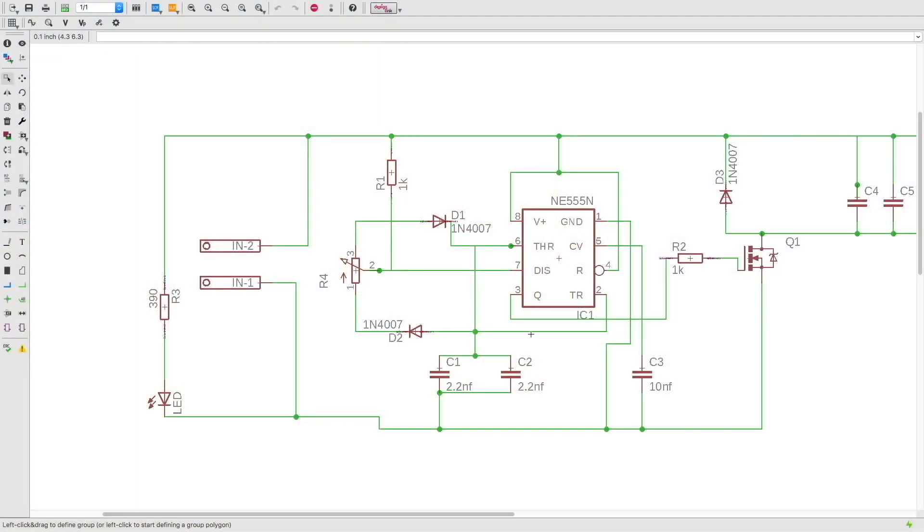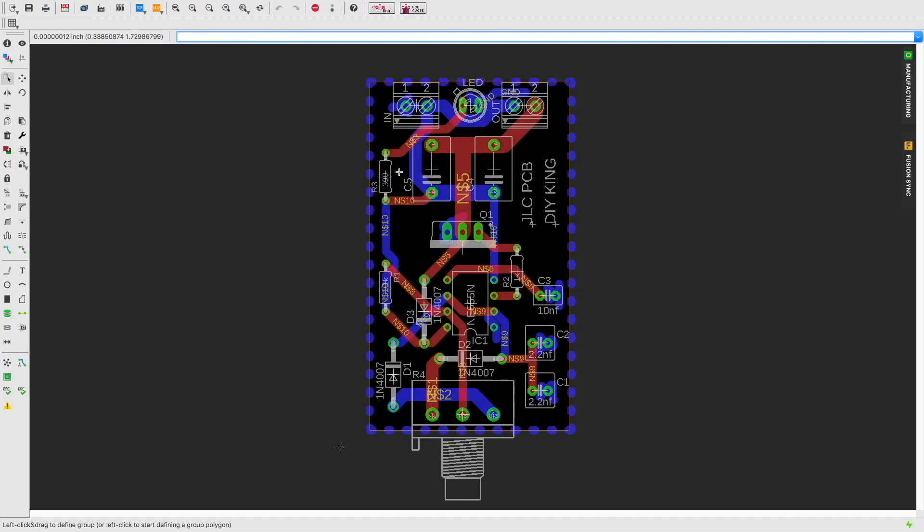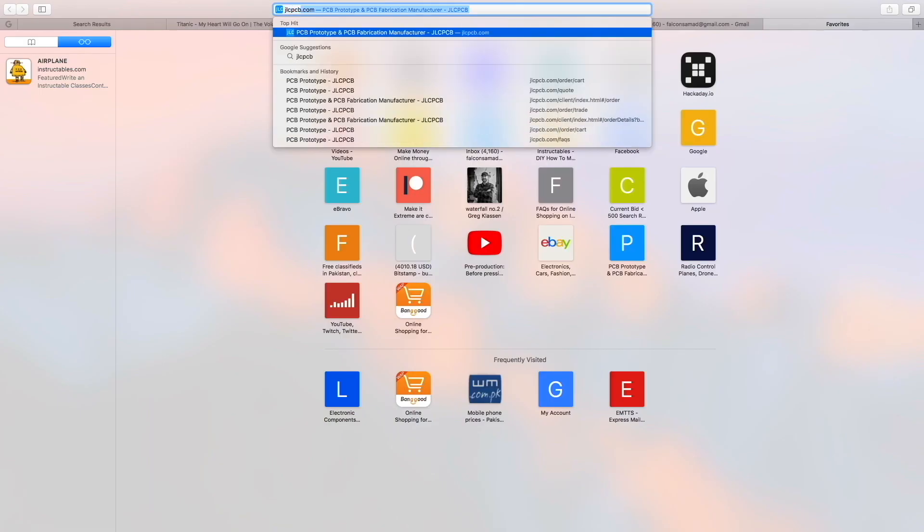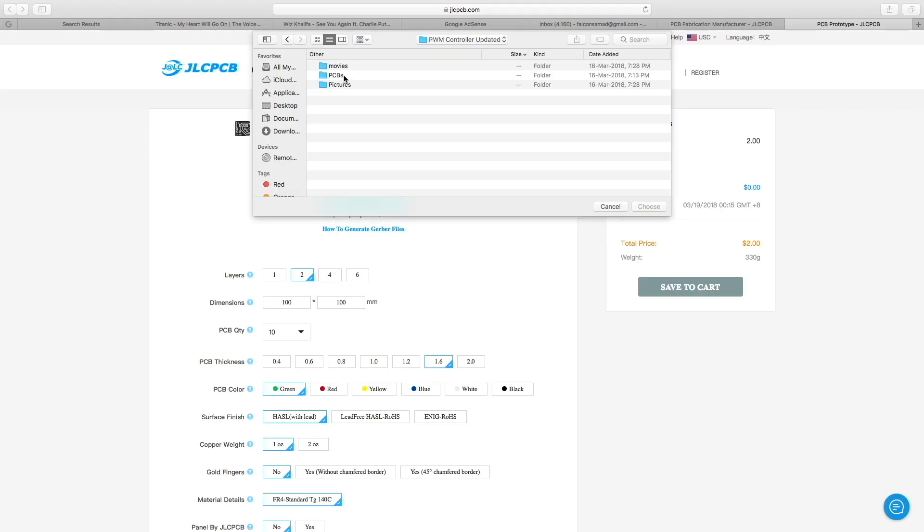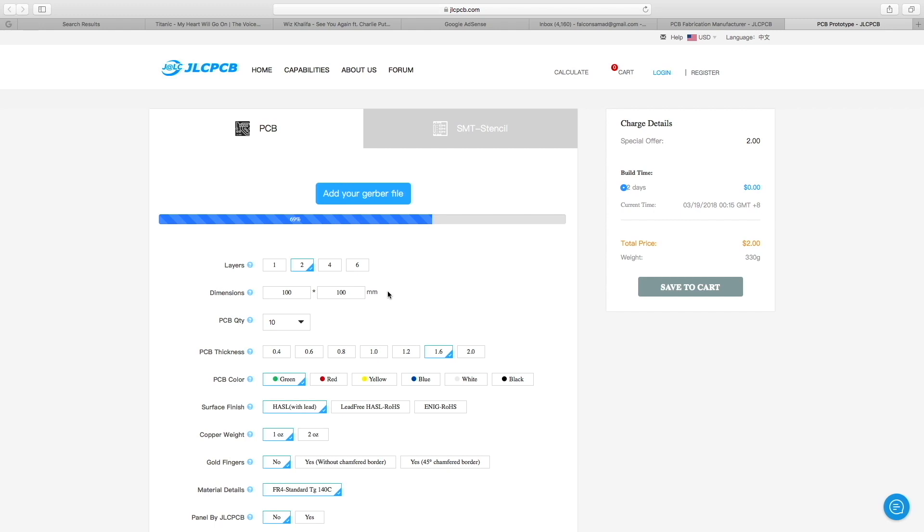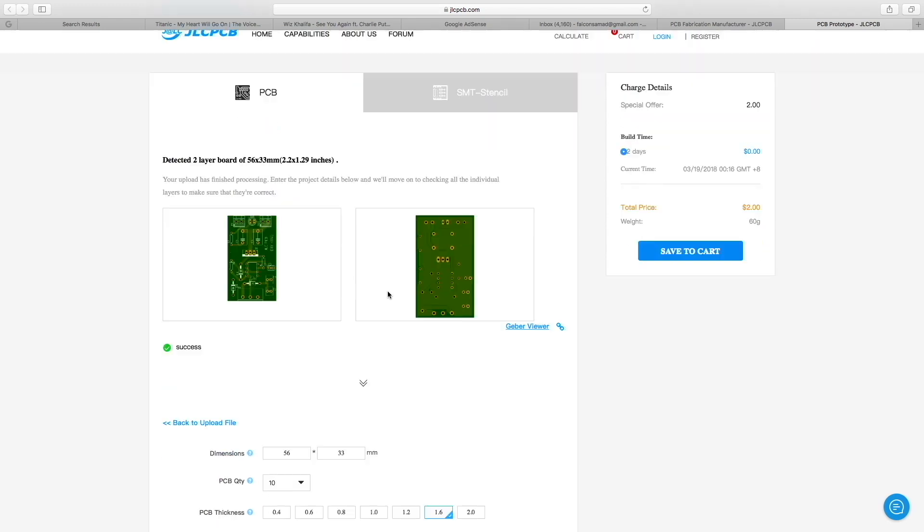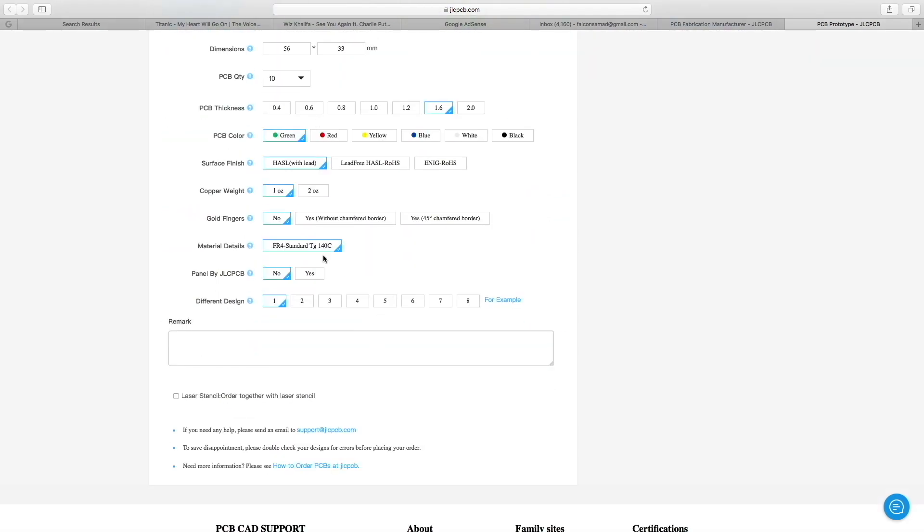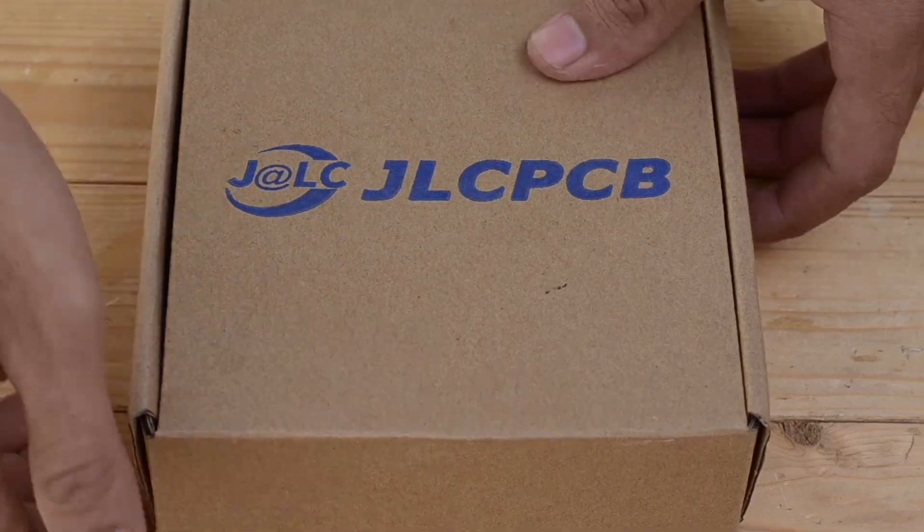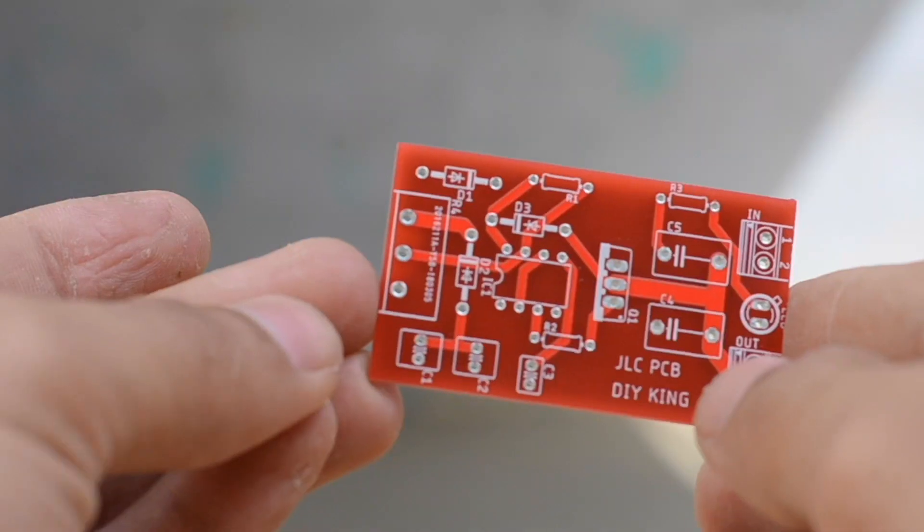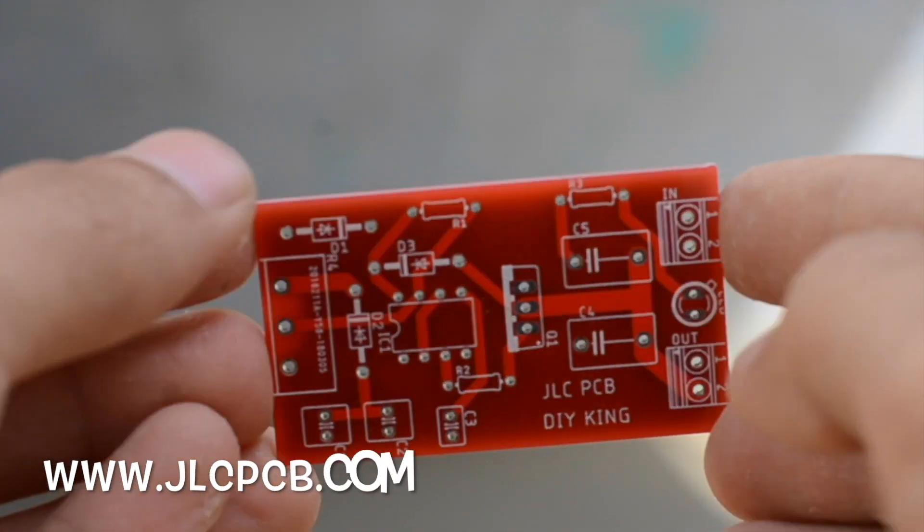For that, I have designed the schematic and later designed the PCB as well. And to order my PCBs, I have visited JLCPCB.com. They are one of the largest PCB manufacturers in China. I have uploaded the Gerber files and later checked out the options that are given below such as quantity of the PCB, their thickness and stuff like that. And once I am done with that, I have checked out. The PCBs arrive within just a week and the quality seems to be outstanding as always. So be sure to check out their website that is jlcpcb.com.